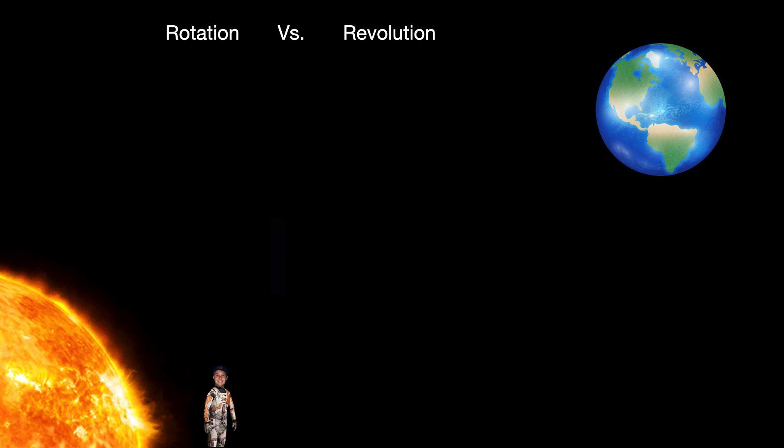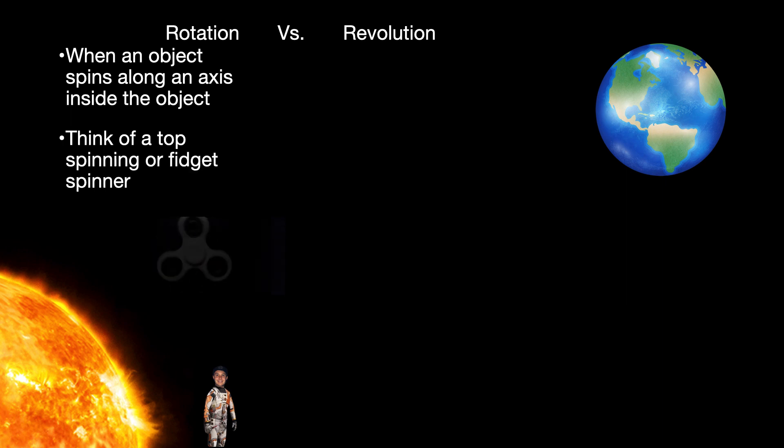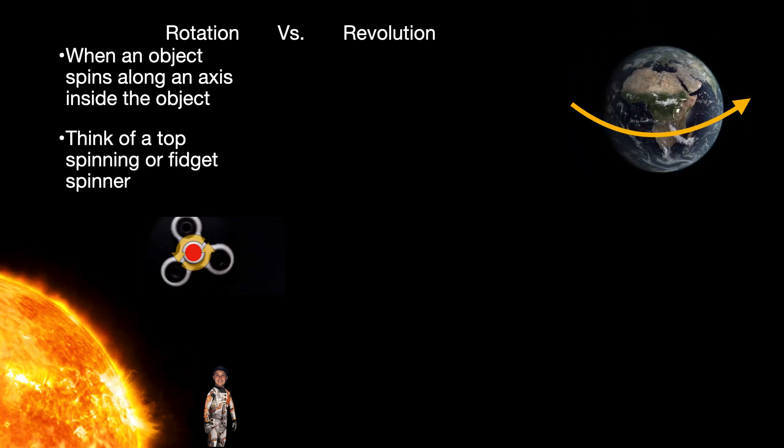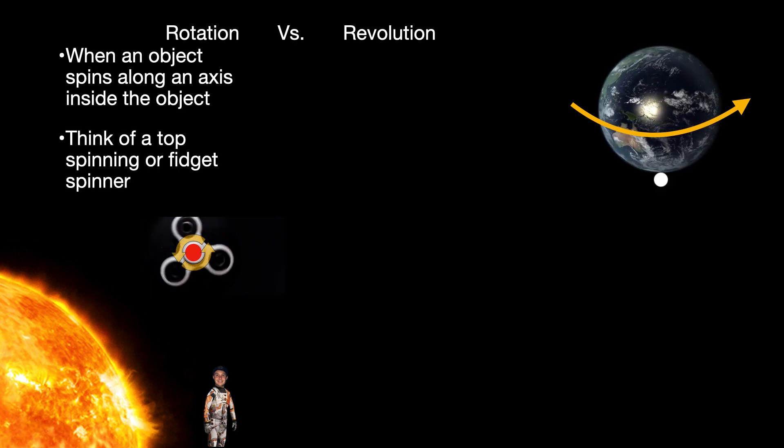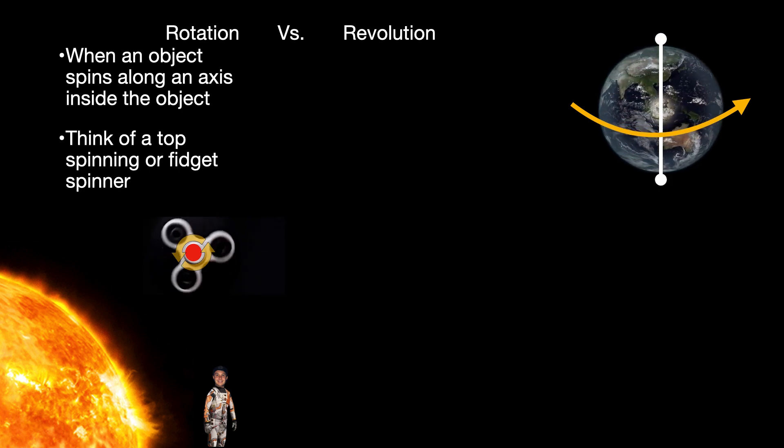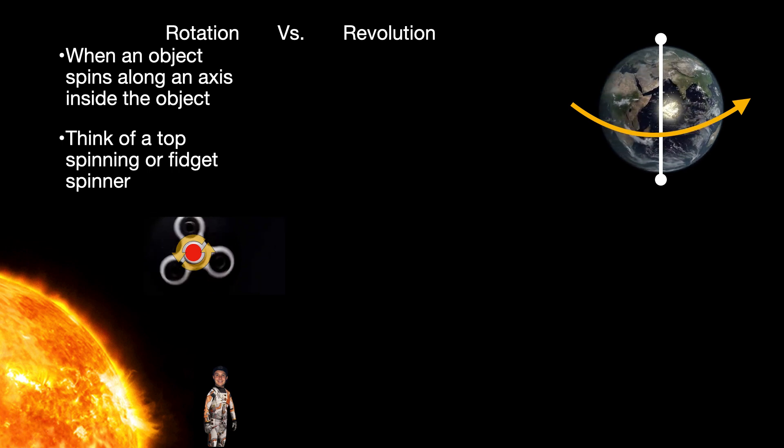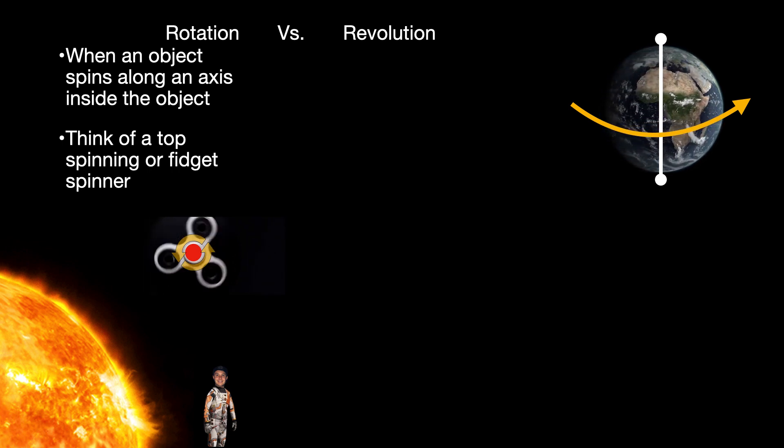So the first thing that we have to go through is the two ways that objects in space can move. The first one is rotation, which is when an object is spinning along an axis inside of itself. You can sort of think of a top or a fidget spinner. In this case, that fidget spinner is spinning or rotating along the center of itself. Earth does this also. So it will spin along an axis inside of itself. Here's a quick animation that shows a simplified version of its motion. It's not hard to imagine that there is an imaginary line that goes from the North Pole to the South Pole that shows the rotation of Earth in this fashion.